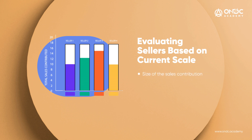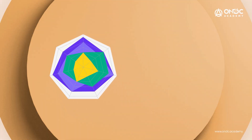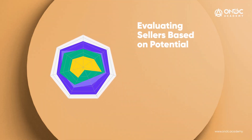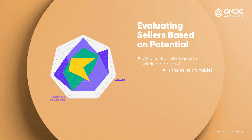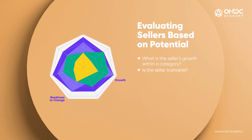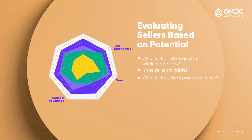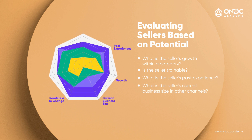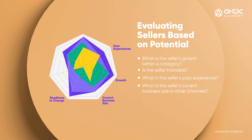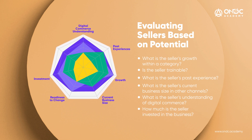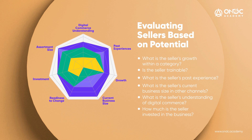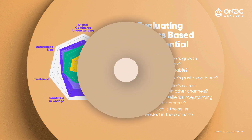To classify sellers based on their potential, we can measure their growth potential by seeing how well they are doing within their own categories, whether they are ready to change and improve, their past experiences, their current business size in other channels, and their grasp of digital commerce.